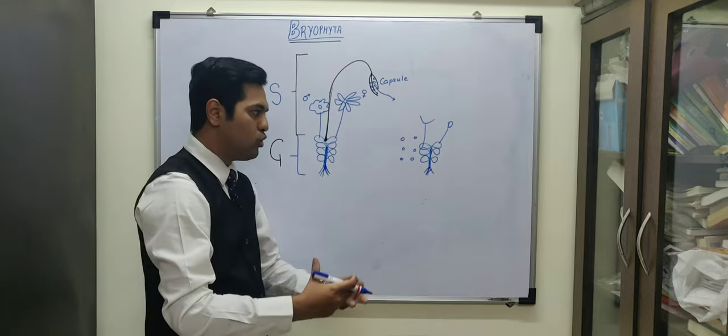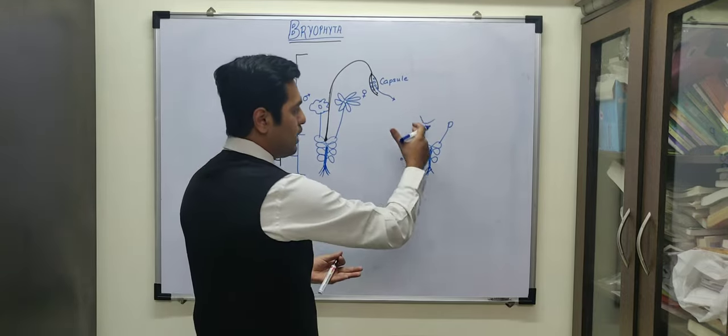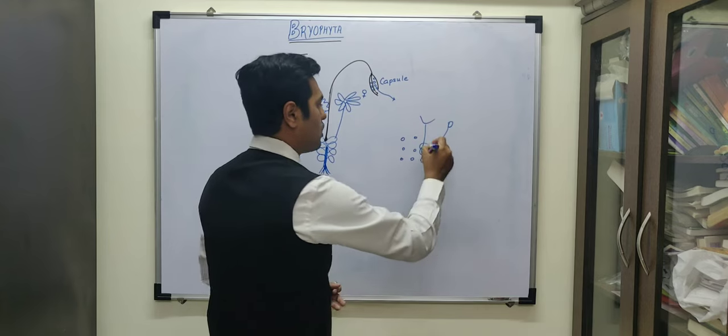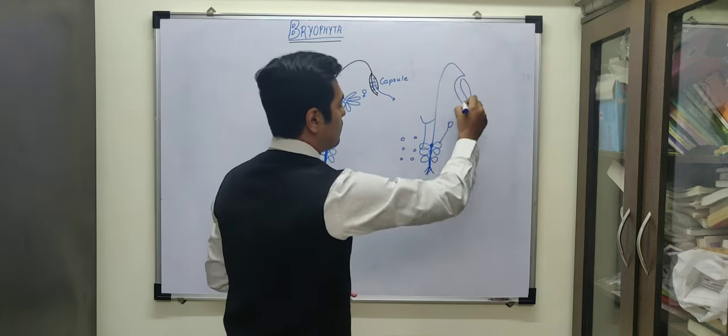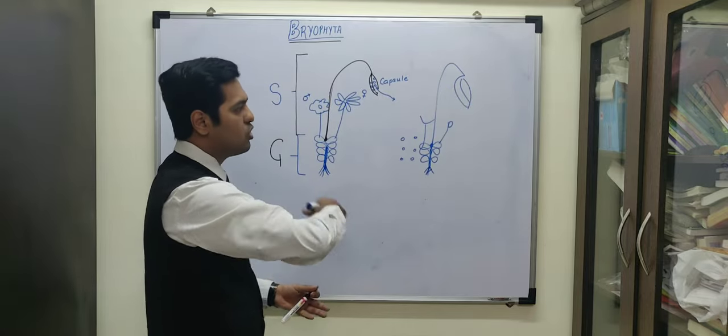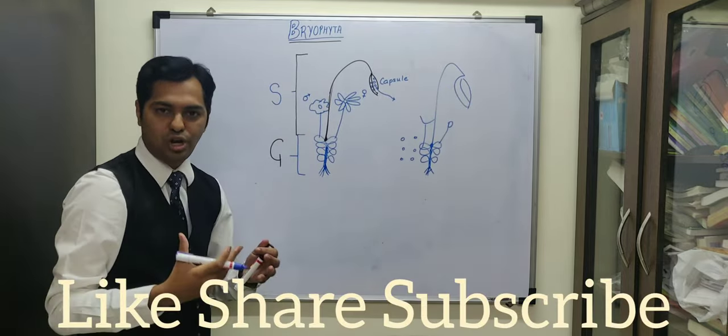antheridia and archegonia, which produce the respective gametes, antherozoids and egg. The zygote forms the sporophyte with foot, seta and capsule. The capsule again produces spores which are dispersed. That is how the life cycle continues.